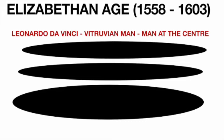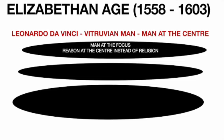Through the Vitruvian Man, Leonardo da Vinci was trying to show that it is man who is at the center of the universe. Please Google the Vitruvian Man and look at the painting — you will see the man at the center, with everything else around him. If man is at the center of the universe, then reason comes into focus, because man has cognitive abilities. So reason became the focus instead of religion.